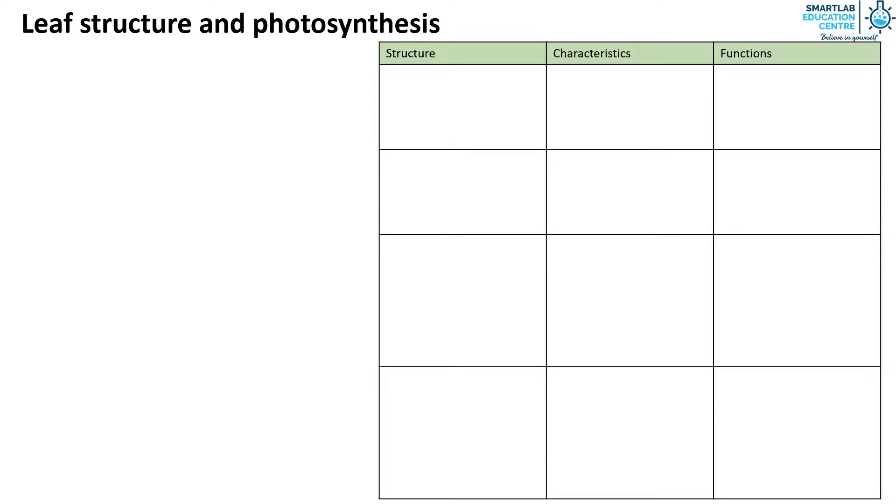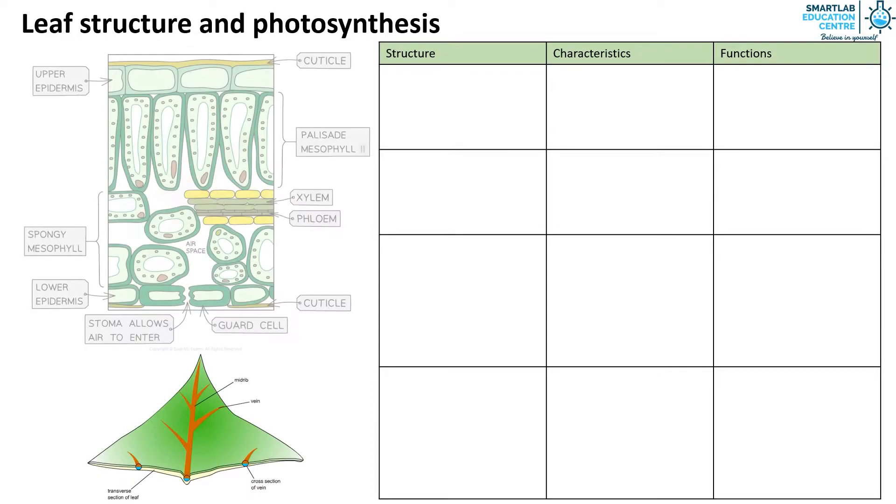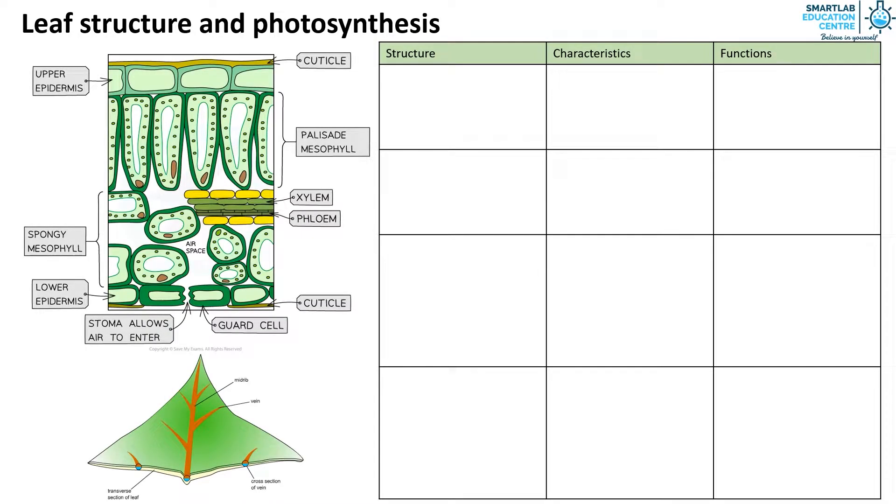This is the transverse section of the leaf and under light microscope these are the various structures one can observe. The first structure we will look at is the upper cuticle. It is thick, waxy, waterproof and transparent. It serves as a barrier against water and gas loss and allows sunlight to penetrate through the lower layers.